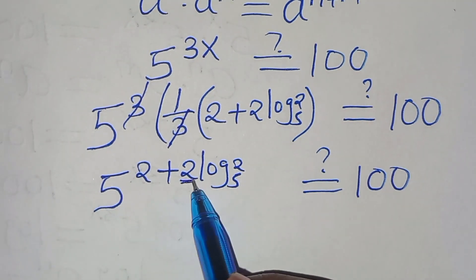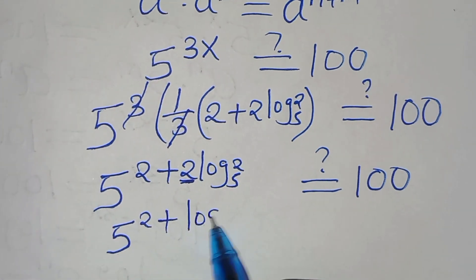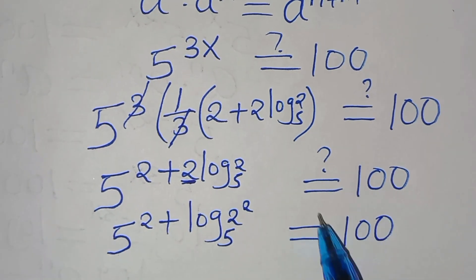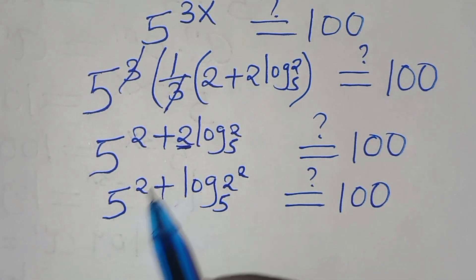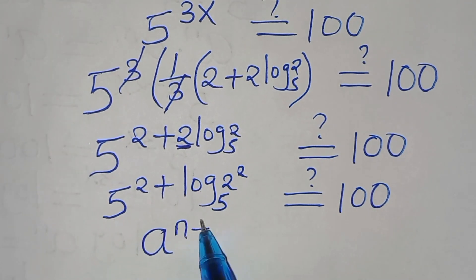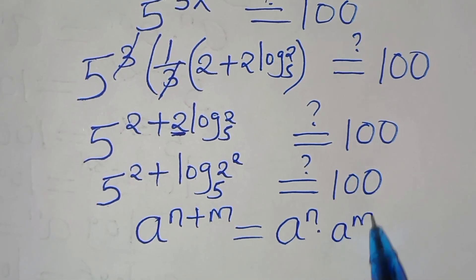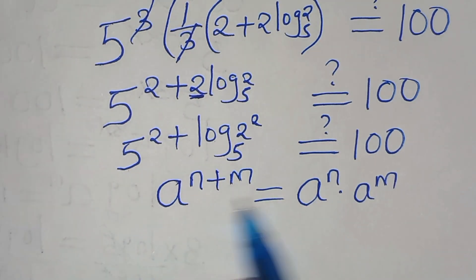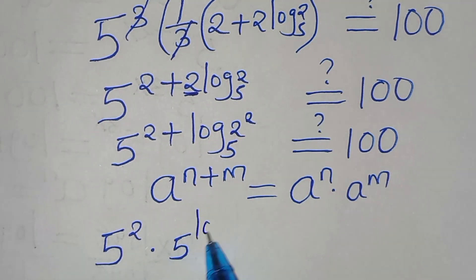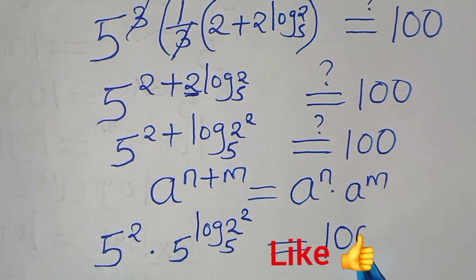Now 2 is a power here, so this is the same as 5 to the power of 2, plus log(2²) to base 5, and this should give 100. This is in the form of a^(n+m), which we can express as a^n times a^m. Applying this exponent property, we have 5 raised to the power of 2, times 5 raised to the power of log(2²) to base 5, and this should give us 100.